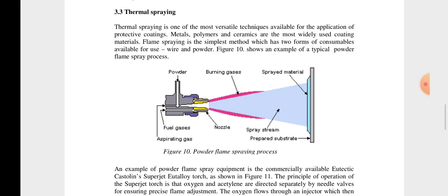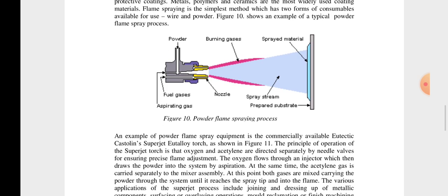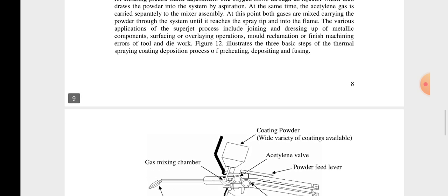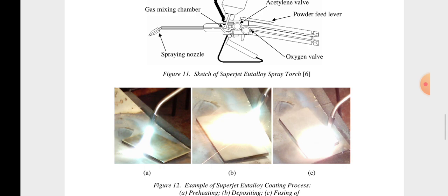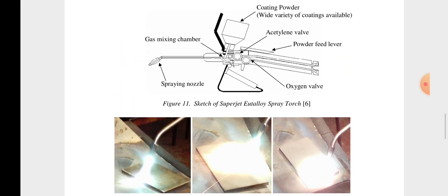Then spray material, then burning gases. So these are the examples or the areas where we are using the surface engineering. Look at the sketch of your spray torch.